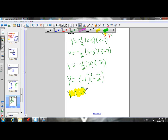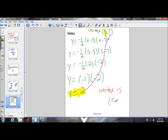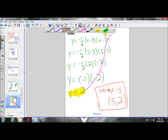So the y coordinate of our vertex is y equals 2. The x coordinate of our vertex is 5. What we do now is plug 2 in for the y value and write the coordinate of our vertex. So our vertex is 5, 2.